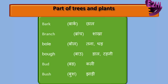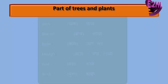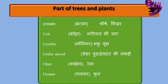Bush — Jhadi. Crown — Sirs, Yashikhar. Coil — Nariel Ki Jata. Conifer — Sankubrach. Cedarwood — Devdar Ki Lakdi.